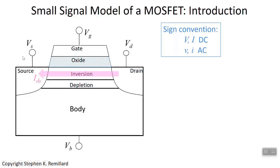Here we have a MOSFET with bias placed: the voltage across the drain and the source, the voltage placed on the gate, and possibly a voltage on the body. For now, maybe we just take the body and the gate and the source to be connected to each other — we'll separate that shortly. Current flows from the drain to the source, and the amount of current depends on the gate voltage. You turn up the voltage, you change the inversion layer thickness and the amount of charge in the inversion layer, changing how much current flows from drain to source.